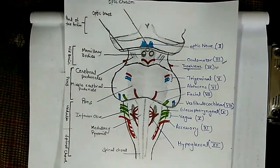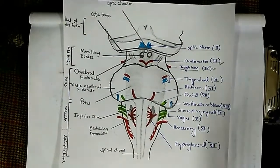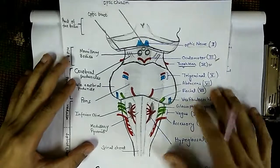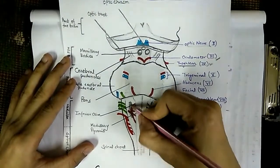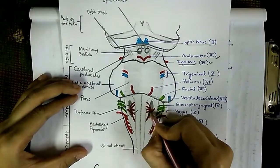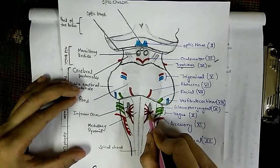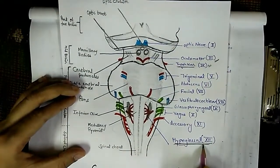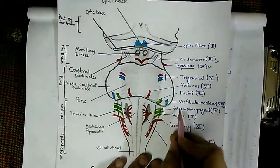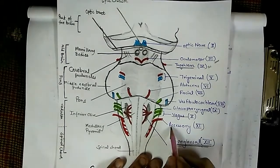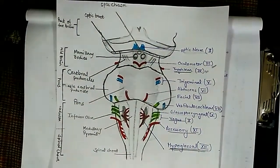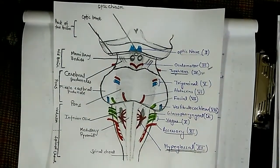Moving to the medulla oblongata, we can identify the two olives. Just above the olives, the hypoglossal nerve — the 12th cranial nerve — originates. More laterally, the glossopharyngeal, vagus, and accessory nerves can be seen originating from the lateral aspect of the medulla.